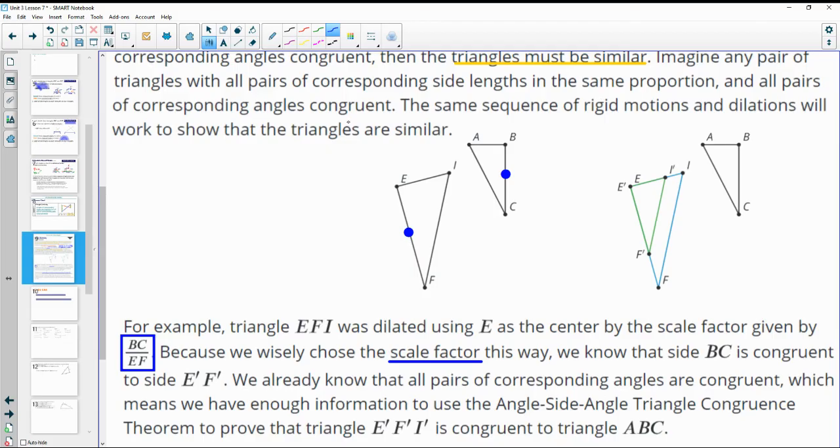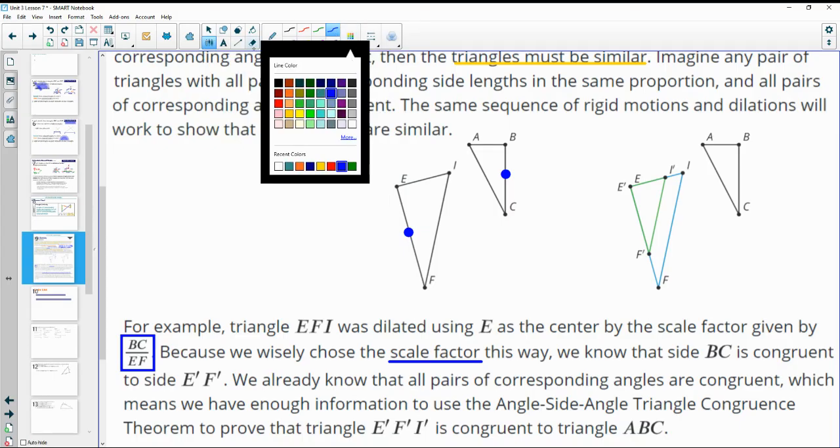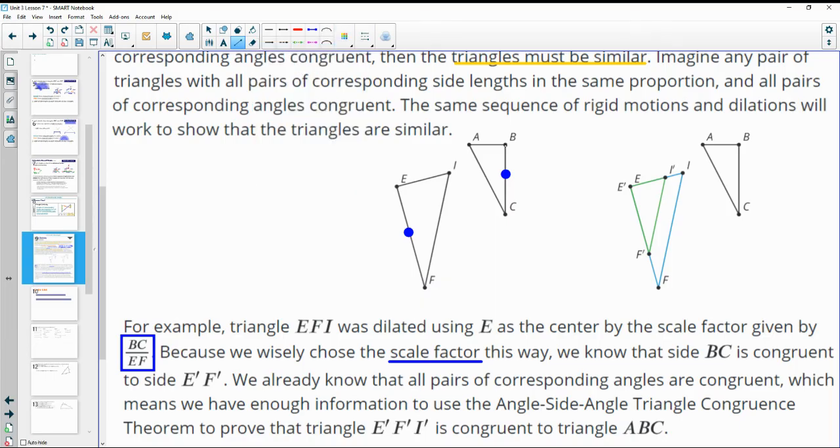All right, and then you saw in there how we looked for scale factor by comparing two corresponding sides. So we said we knew EFI was dilated using center E. And then the scale factor, we would just compare two corresponding side lengths. So we just divided BC and EF. So always take the image divided by the original. That'll give us our scale to dilate.